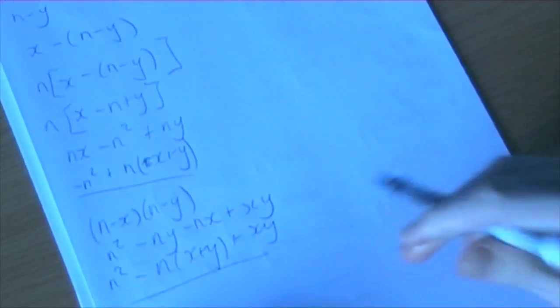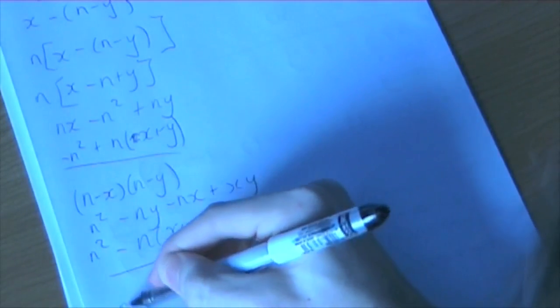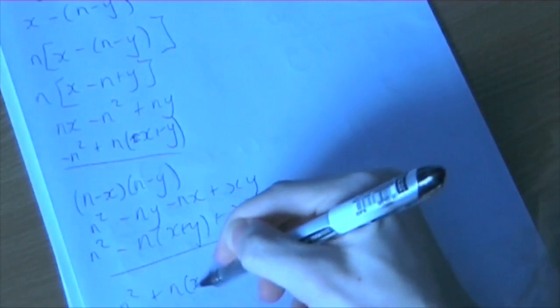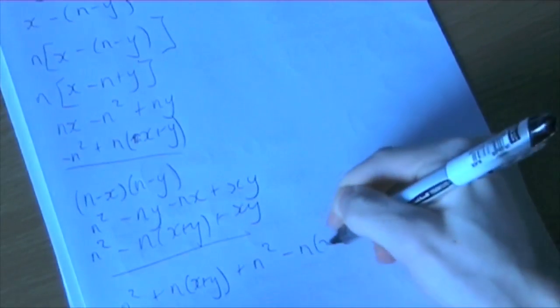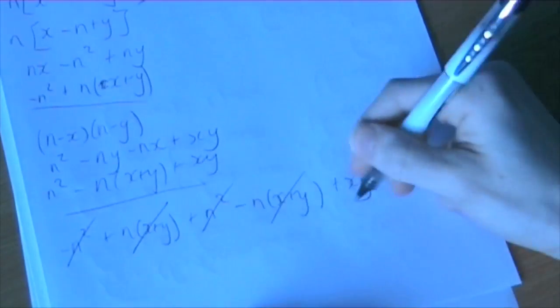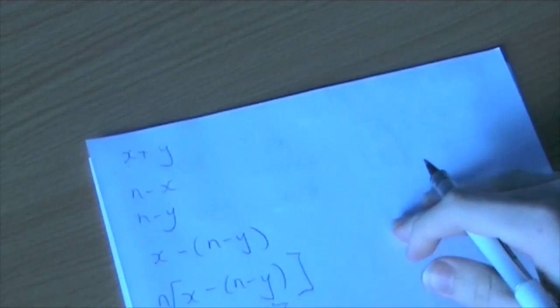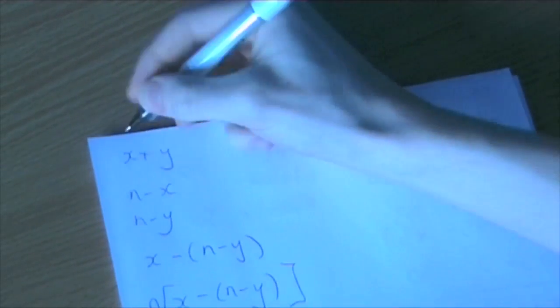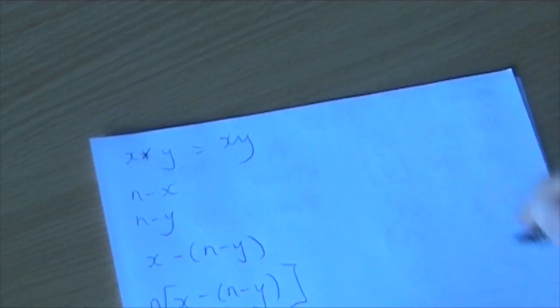And then we just did that plus that to get minus n squared plus n(x plus y) plus n squared minus n(x plus y) plus xy. And once again, the n squareds cancel each other out. They cancel out. And we're just left with xy. And if we go back to the beginning, that was supposed to be multiplied. x times y equals xy.